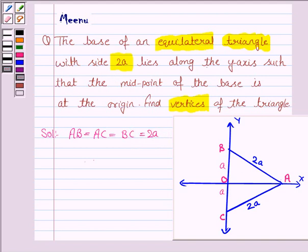We are given that the base lies along the y-axis and origin is the midpoint of the base. Since origin is the midpoint of BC, therefore OB equals OC equals a. Since BC has length 2a and O is the midpoint, OB equals OC equals half of 2a, that is a.